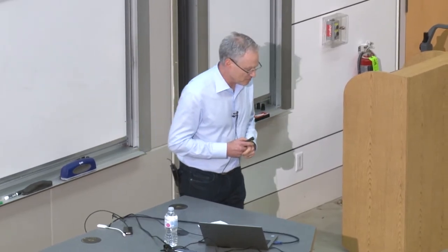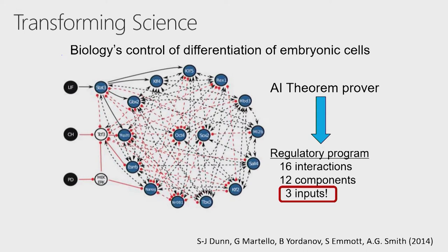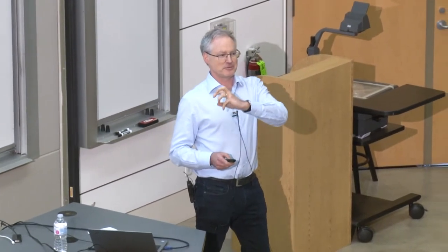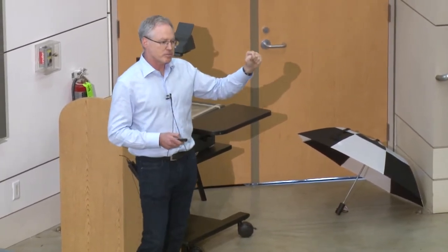I would be remiss if I didn't mention the power of these methods for assisting science. Some work that I think about when considering how AI will transform how science is done — a team led by Sarah Jane Dunn at our Cambridge lab in England looked at protein expression data coming out of cells as they transition from stem cell to a final tissue type. By applying Z3, a logical theorem prover, they discovered that cells were locked into place with just three inputs — three signals — cutting through all the complexity to understand cell state transitions.